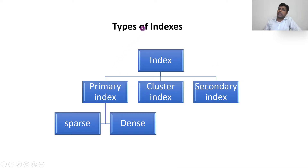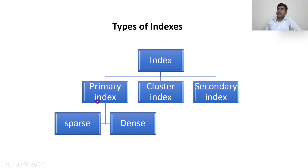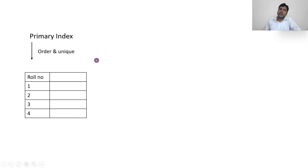We have totally three types of index: primary index, cluster index, and secondary index. Primary index is further divided into sparse and dense. Let us first see an overall comparison of what is the difference between primary, cluster, and secondary index, and then we will go through each one individually.